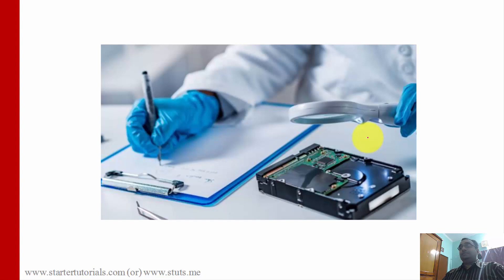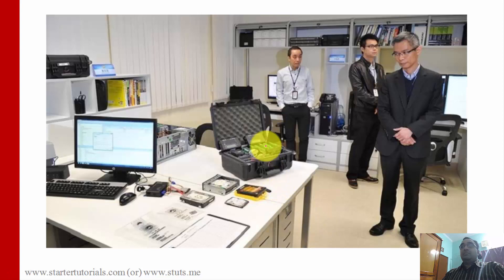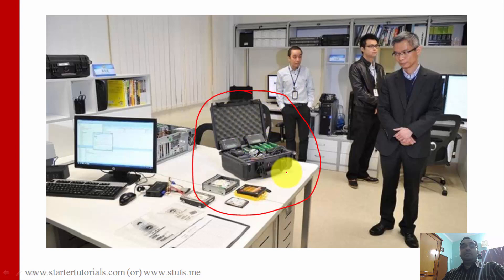For example, a hacker compromises the database of a website, so in that case the website owner will order a forensics investigation. Most of the time in computer forensics, people search for evidence in storage devices like hard disks, CDs, DVDs, pen drives and all these things. Sometimes the forensic people will also investigate the RAM of the system. Forensic people will have specialized hardware as well as software tools using which they perform the forensics.